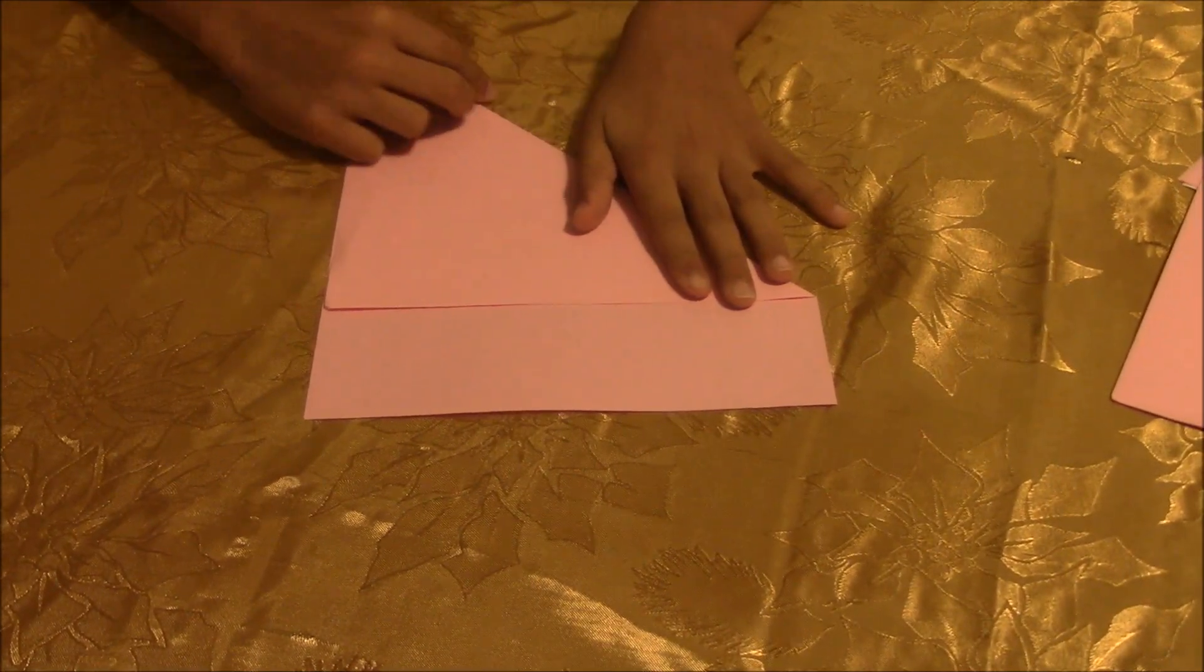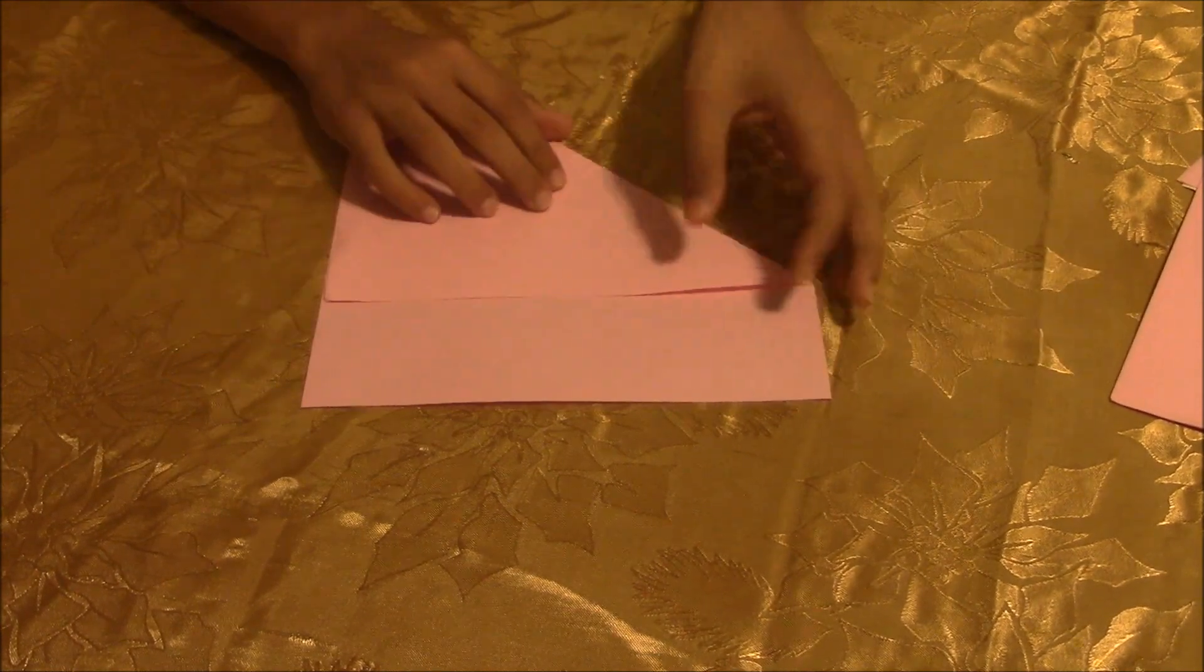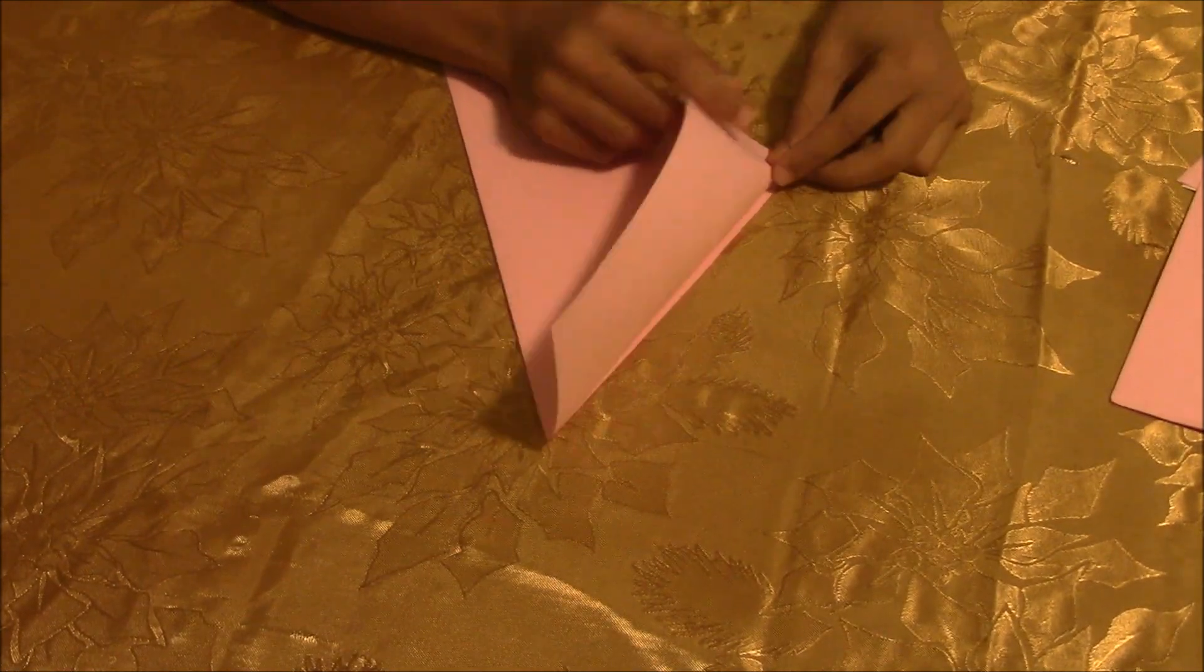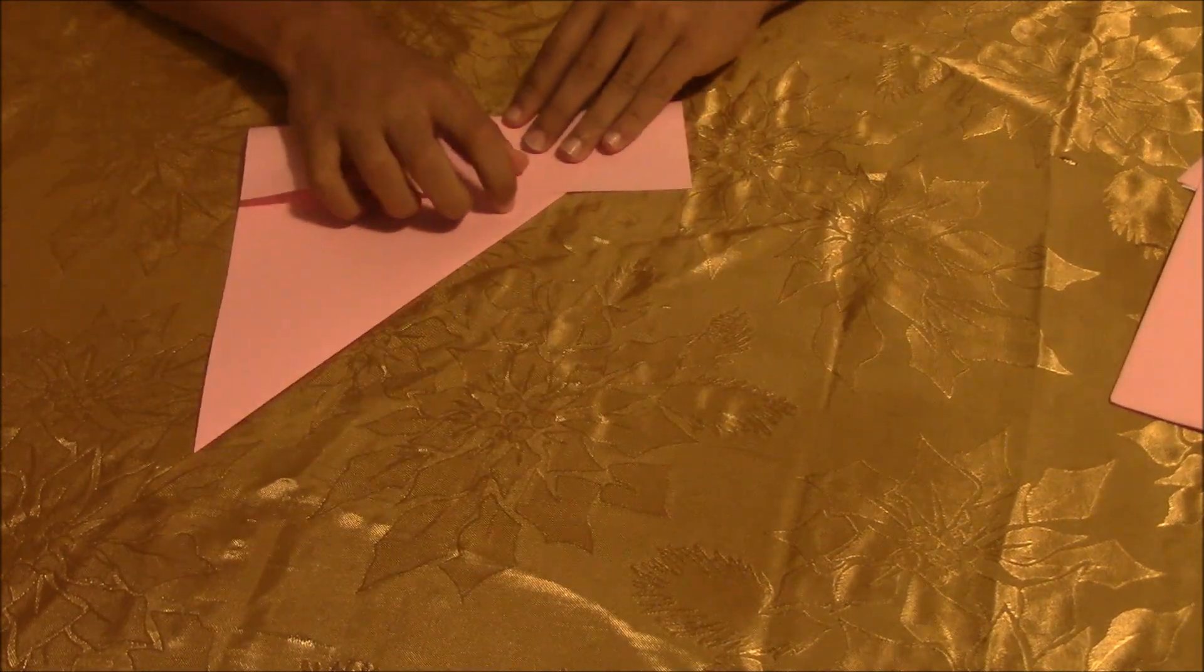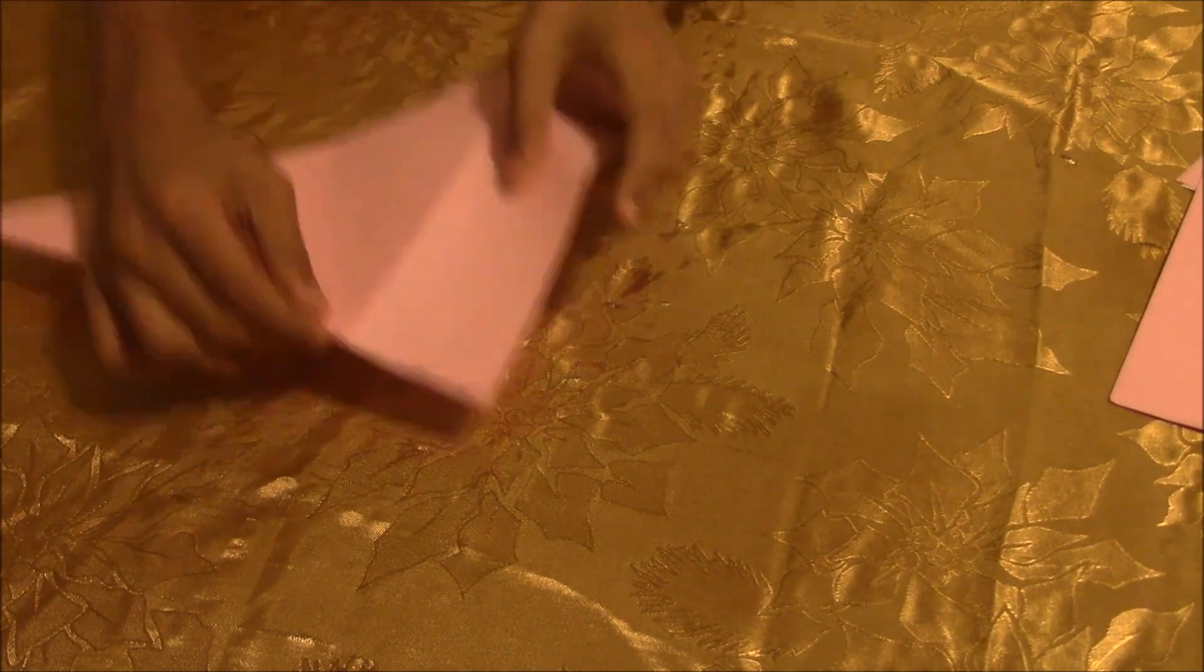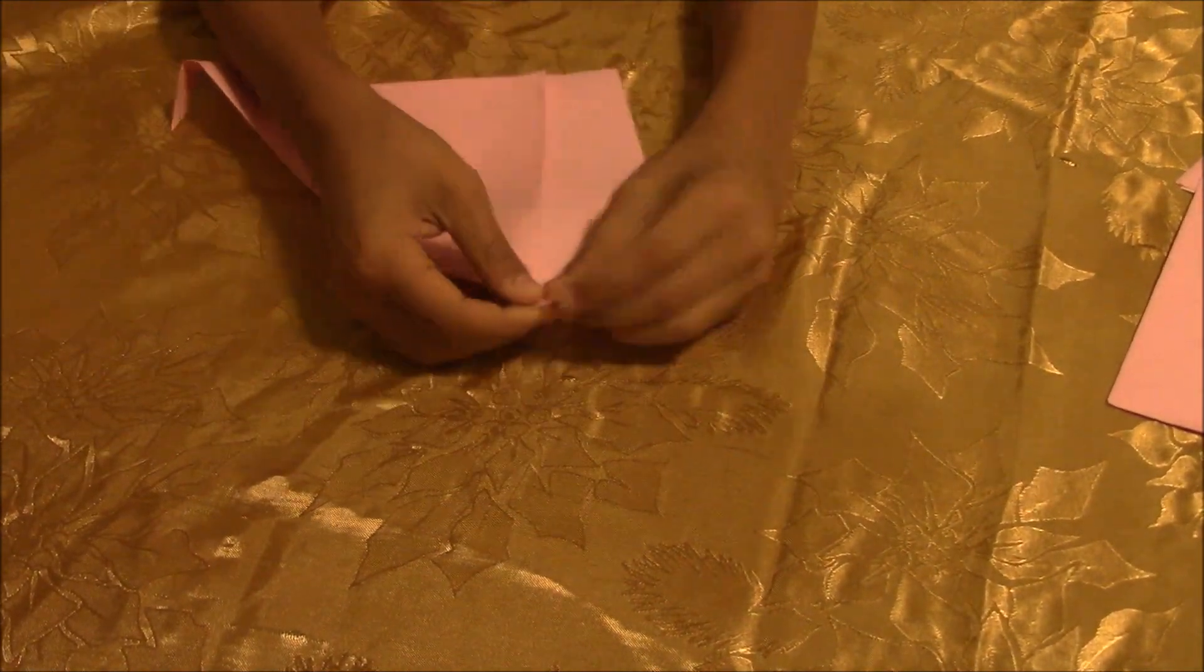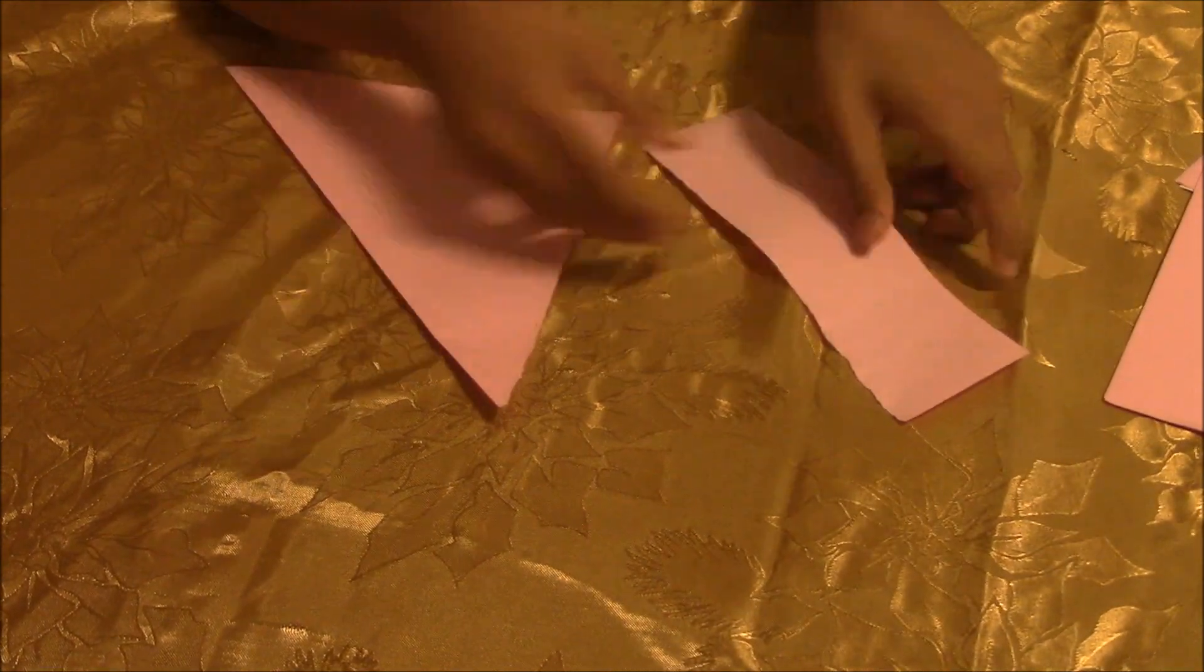And crease it. And then now you're going to cut the extra paper that is not part of the triangle. And fold it outwards like that. And then you can rip it off.